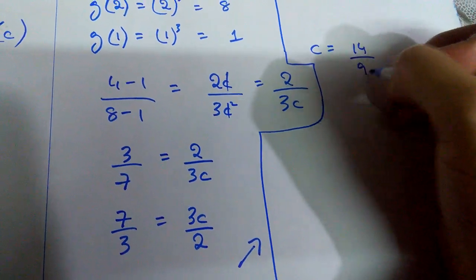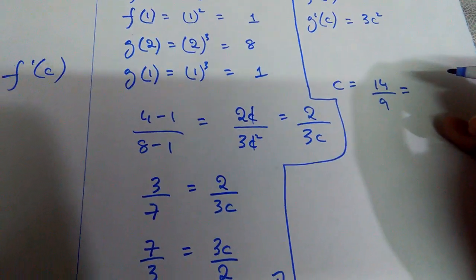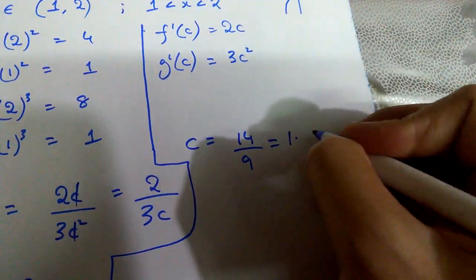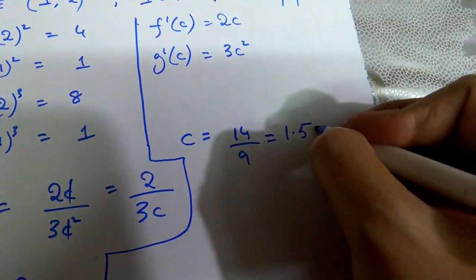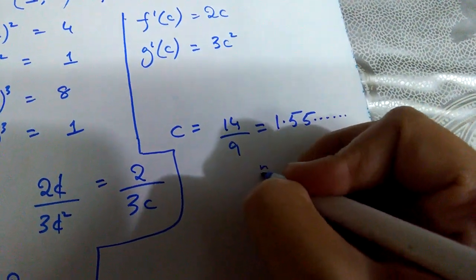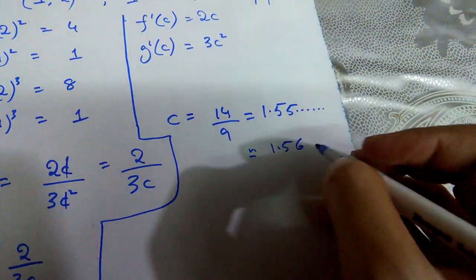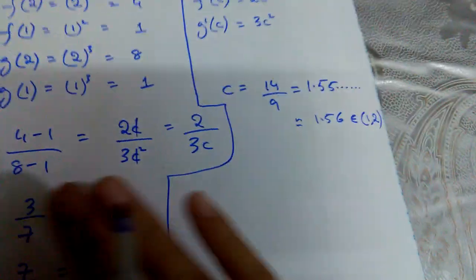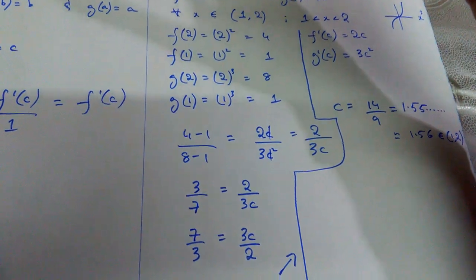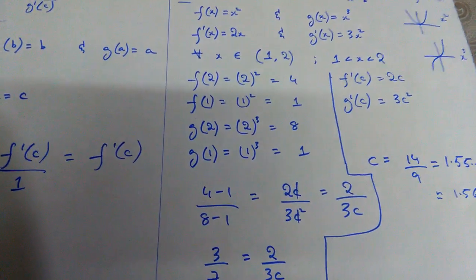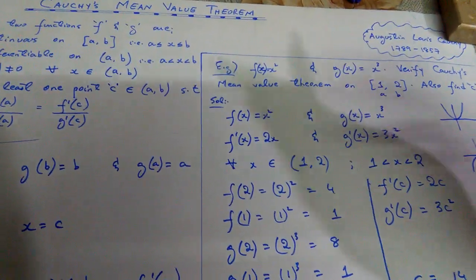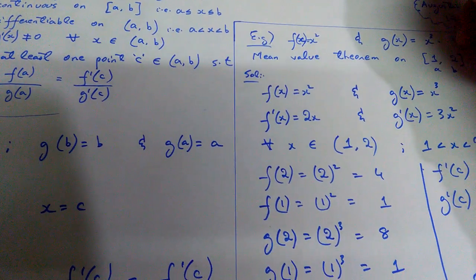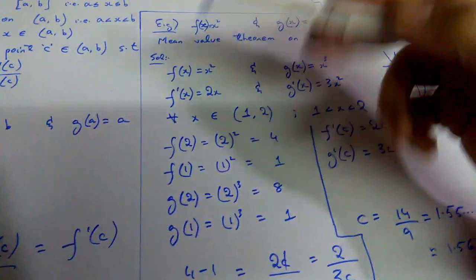So c = 14/9, which is a non-terminating, non-repeating rational number. On solving, you can confirm from your calculator it is approximately 1.555, which we approximate to 1.56. You can see that 1.56 belongs to the open interval (1, 2). This is what we did algebraically — numerically.